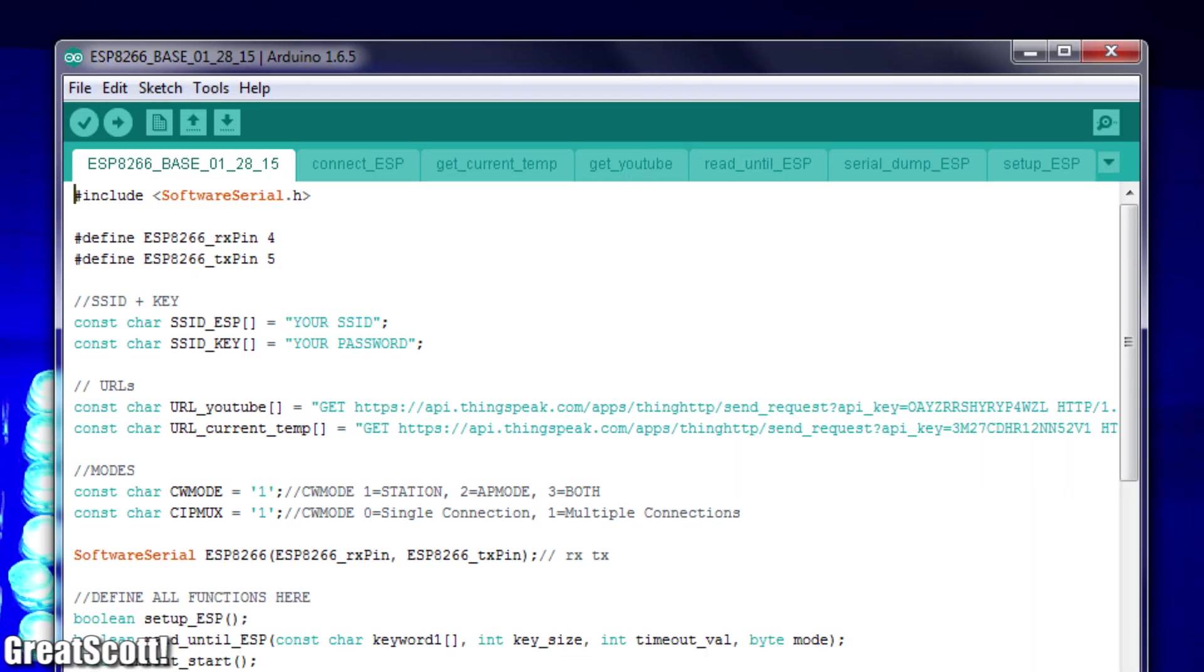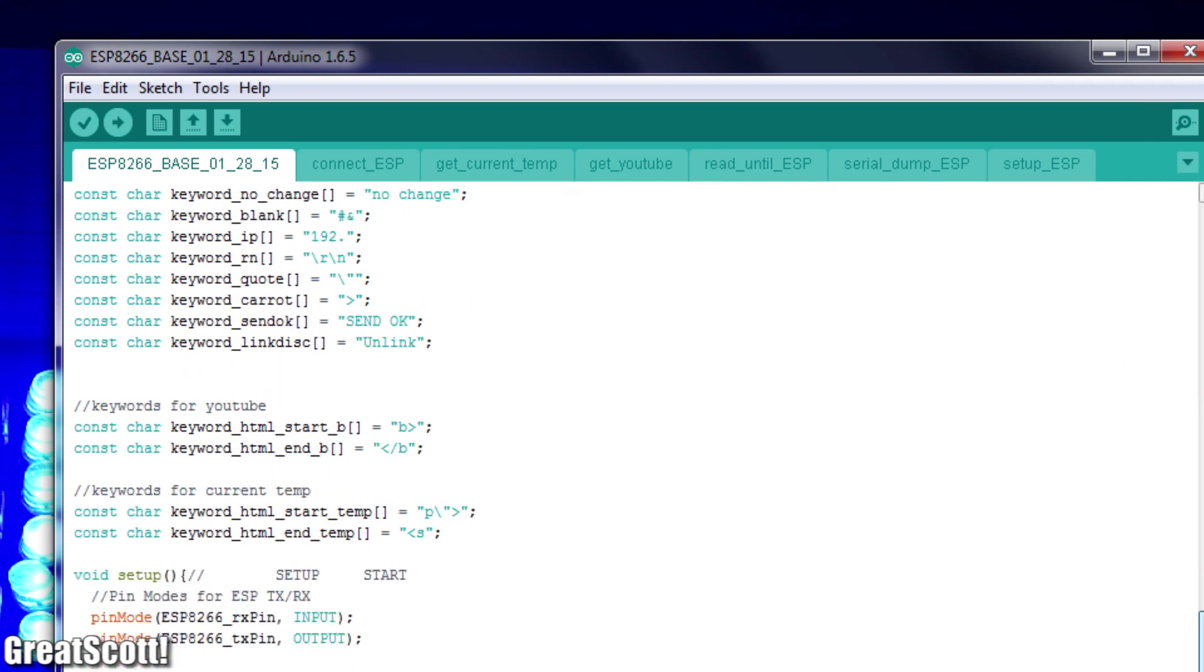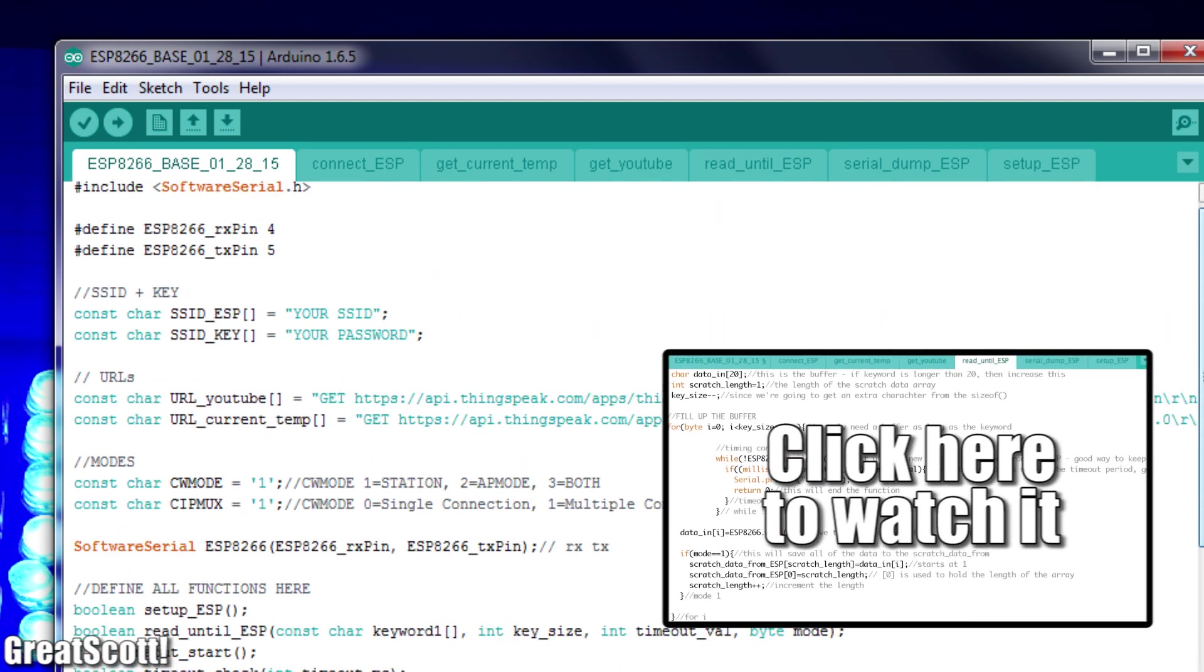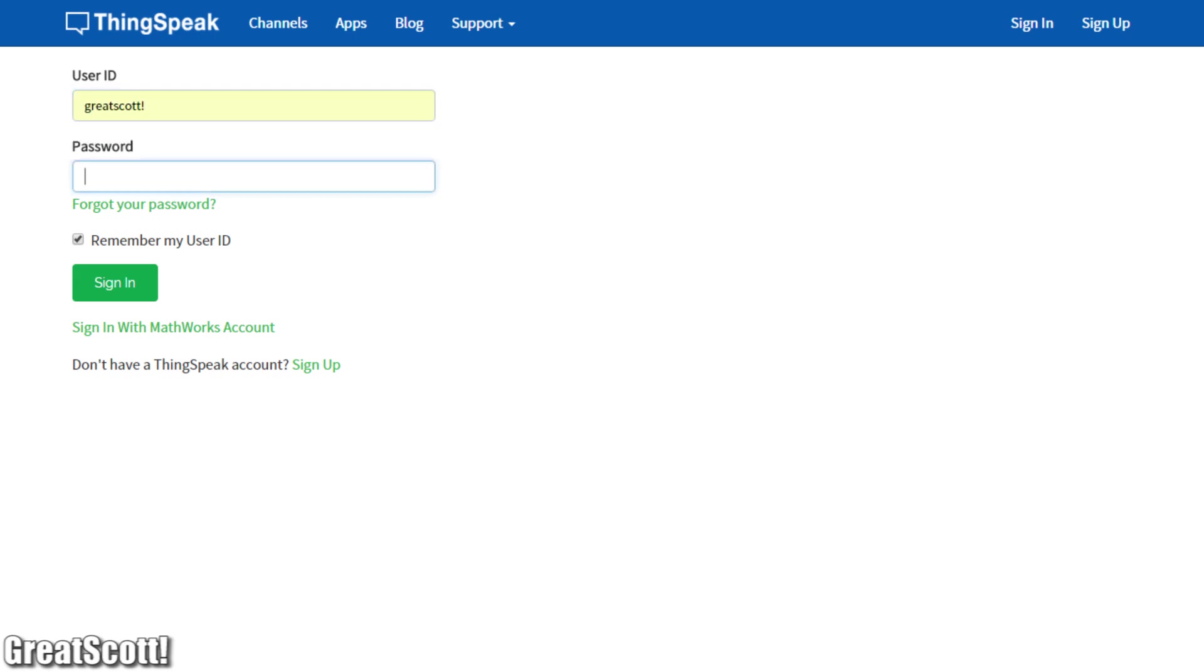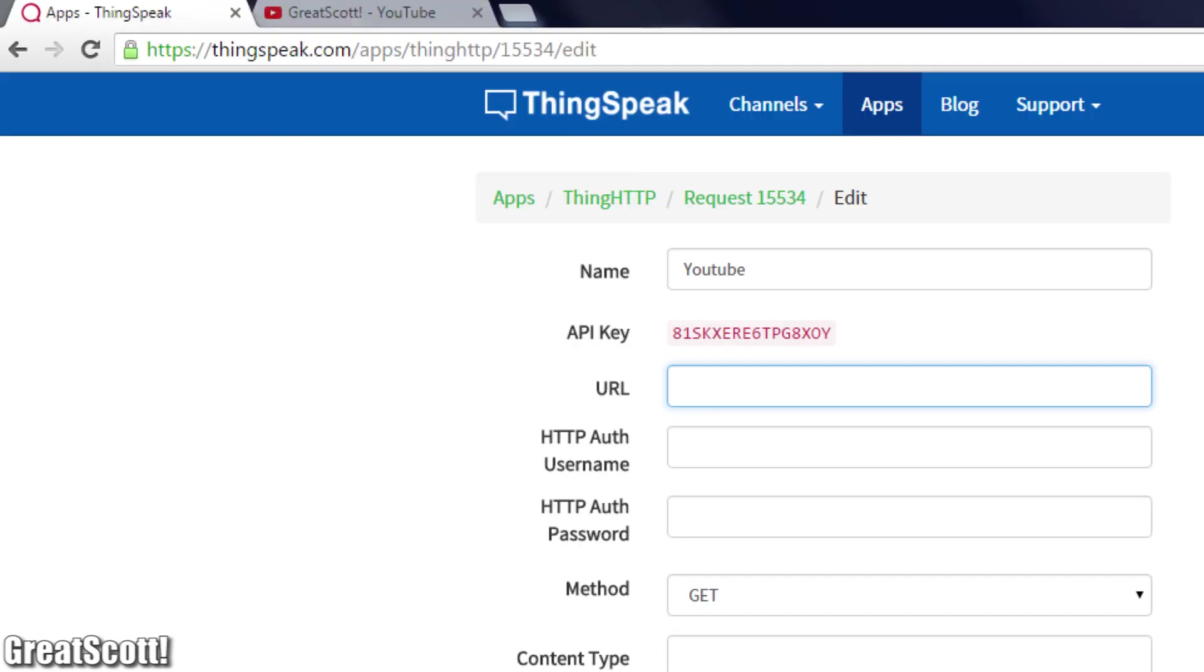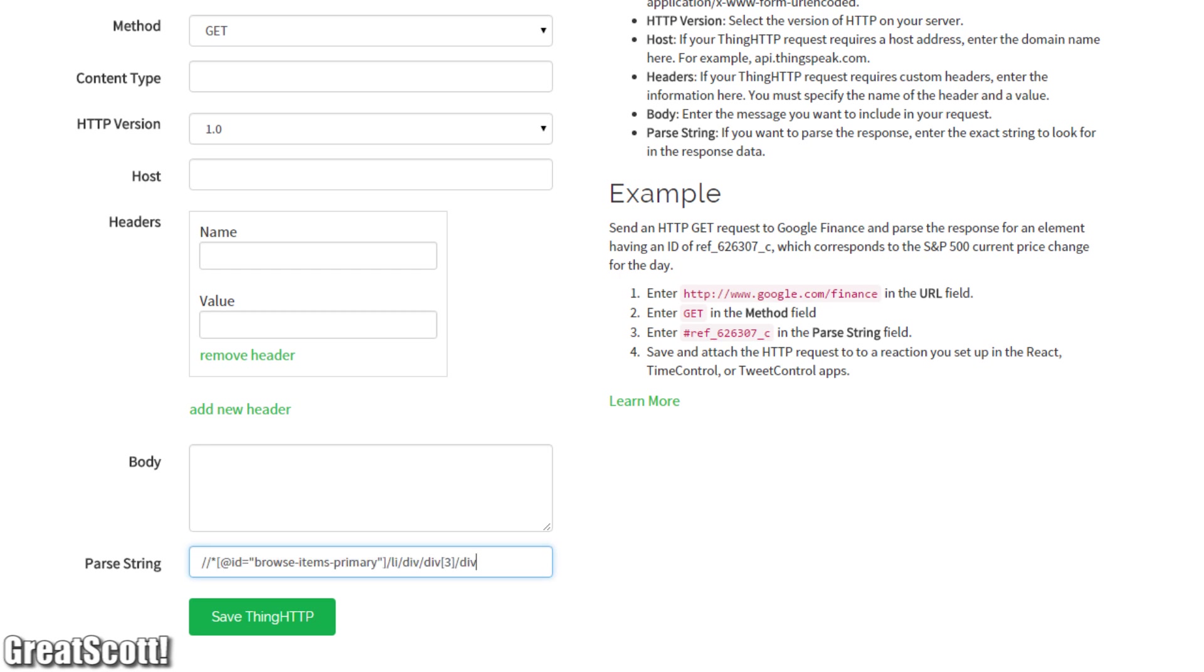Now to receive data from the web I used a pre-made code by Karen Dara who did an excellent job of this. Check out his video about it if you haven't seen it yet. But let me give you a small summary. By using thingspeak I can create a thing HTTP where I can insert the address of the website with the data and a parse string which is the x-path of the exact object I care about.